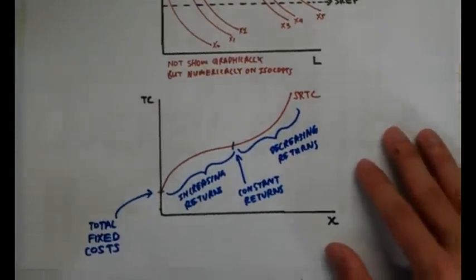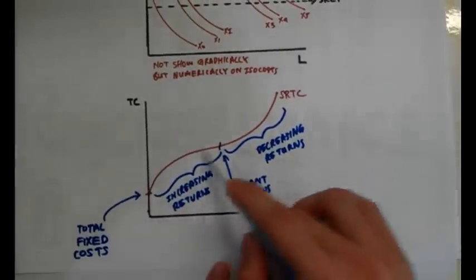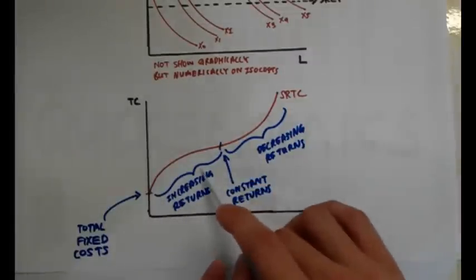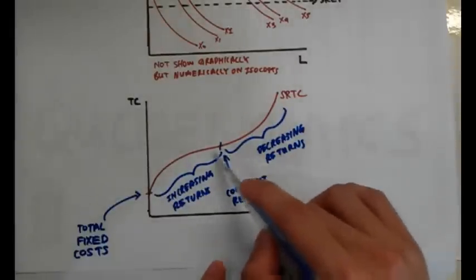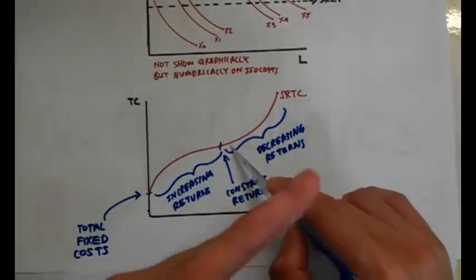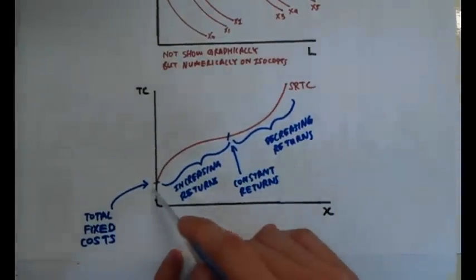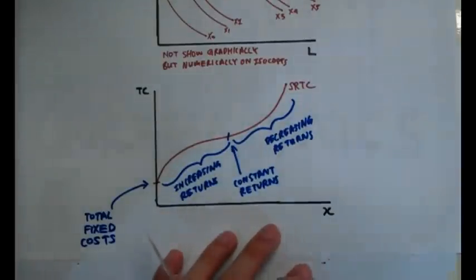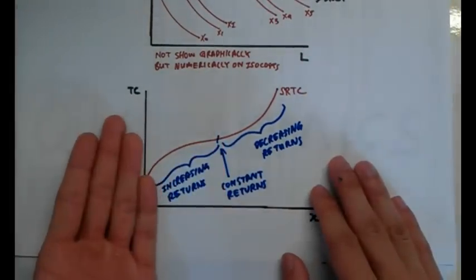This is what the short run total cost should look like because of this thing known as return to factor, the law of diminishing returns. This part where it's caved this way is your increasing returns part, and where it's caved in this way is called your decreasing returns part. And the middle part, the point where it changes direction, is your constant returns part. The total cost curve is going to start at this point over here on the total cost because that represents your fixed cost.